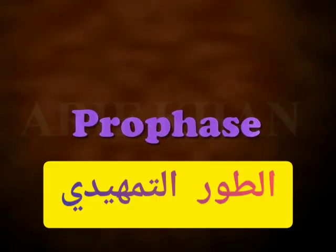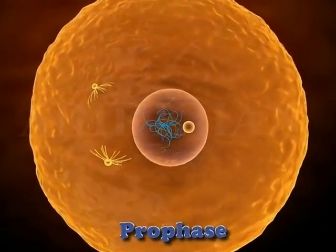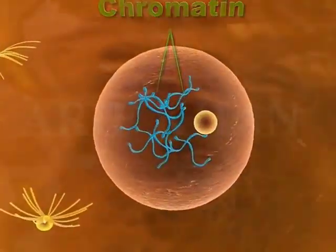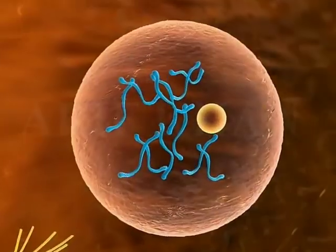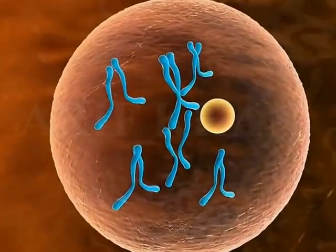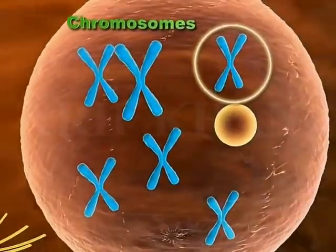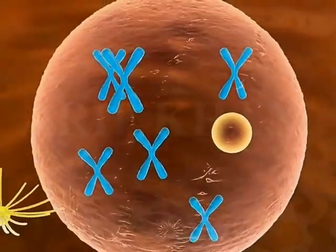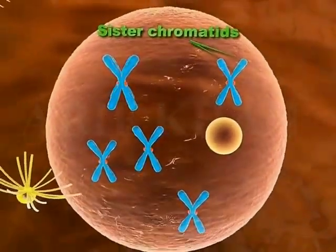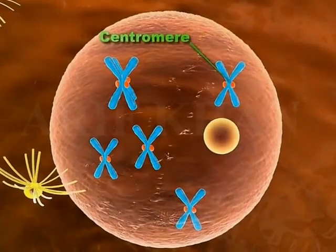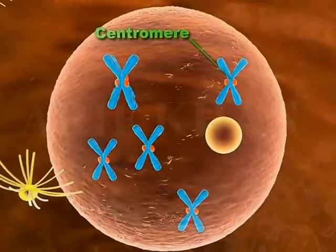During prophase, the chromatin condenses and becomes short and thick to form chromosomes. Each chromosome has two sister chromatids joined together at the centromere.